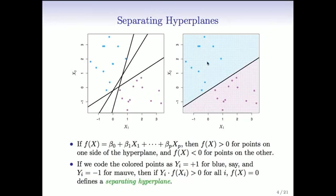So, what we can do is code the colored points. Those that are blue, say we make them one. And those that are mauve, we make them minus one. And then we can say that if the y that we've made, y is plus or minus one, times the value of the function is positive, then we classify each of the points perfectly because they're on the right side of the hyperplane. And the function itself evaluated as zero is called the separating hyperplane. So, that helps us define what we mean by separating hyperplane, if this product is always positive, where we've coded the points as plus one and minus one.